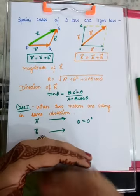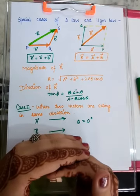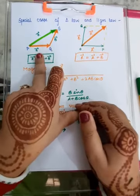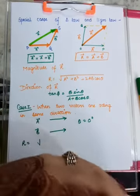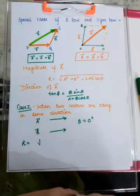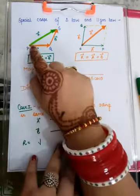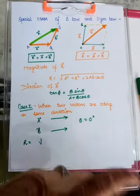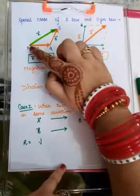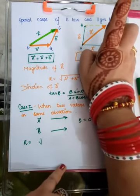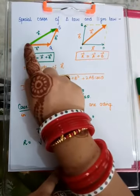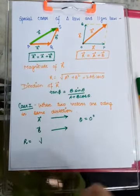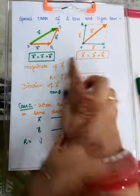Let's have a brief recall of what triangle law and parallelogram law are. In triangle law, if there is vector a and vector b, they are both represented by two sides of a triangle taken in the same order. Their resultant — their overall effect — is represented by the third side of the triangle, which is not taken in the same order. Going P to Q, Q to S, it should be S to P but the resultant is from P to S. The resultant is written as a vector plus b vector.